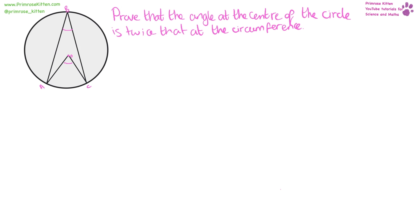The first thing I'm going to do is add in an extra line from the center to B. Now we have three lines going from the center to the circumference — a line at A, a line at B, and a line at C. All the lines going from the center to the circumference are equal, so what we have set up now are some isosceles triangles.